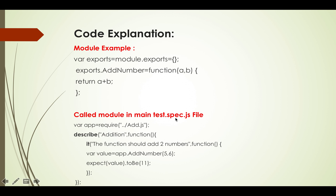We will then call this module in our main spec file. Our filename is test.spec.js. First we include the add.js file, then we define the describe block. The describe name is 'addition', and inside the callback function we use the it block, which says 'should add two numbers', followed by a callback function.